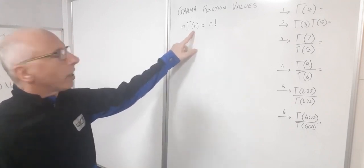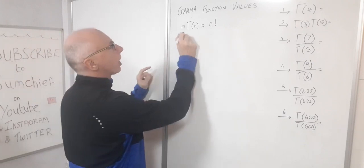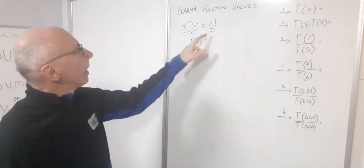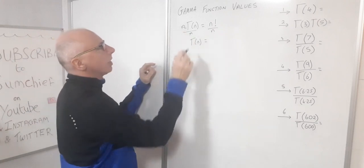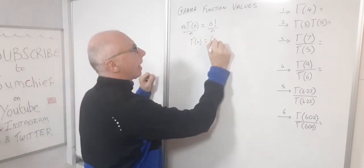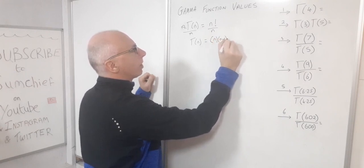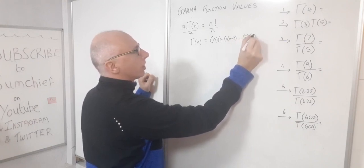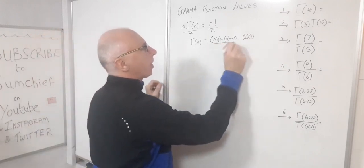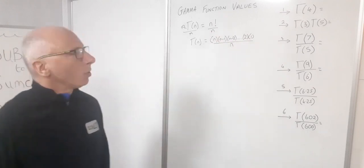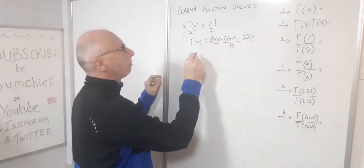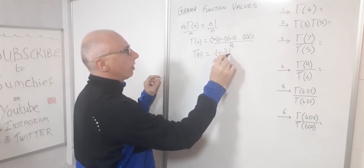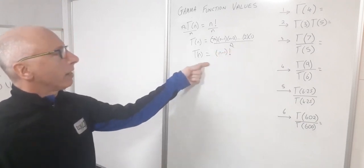To get gamma on its own, divide both sides by n, and we get gamma(n) on the left-hand side equal to n factorial over n. Since n factorial is n times (n-1) times (n-2) down to 2 times 1, dividing by n cancels the n on top and bottom, so gamma(n) equals (n-1) factorial. That's how it's related to the gamma function.